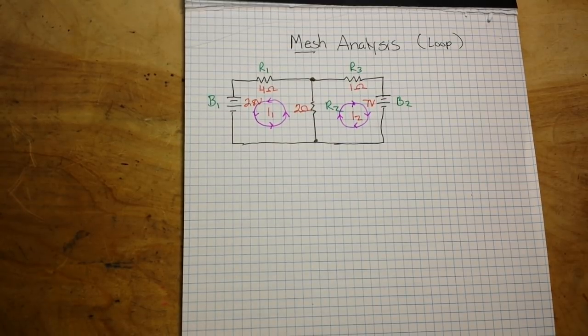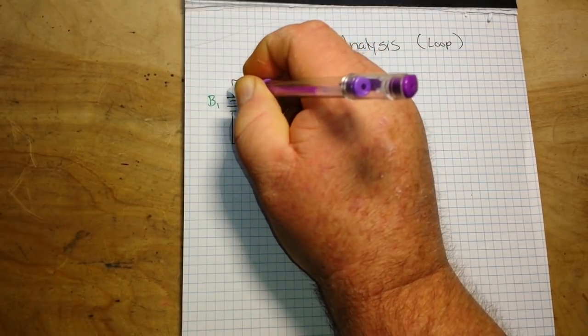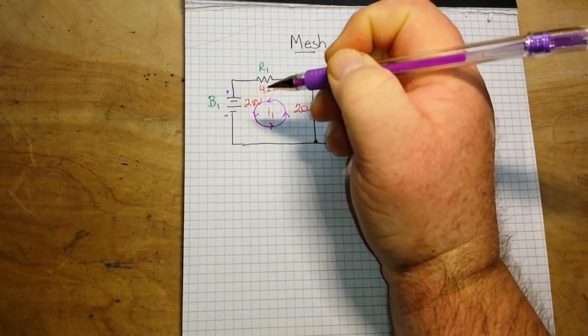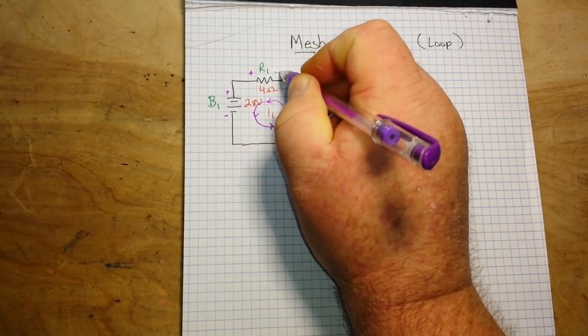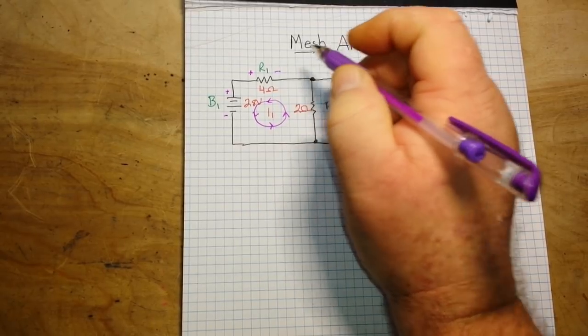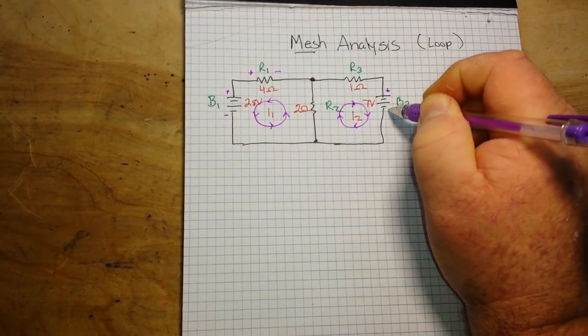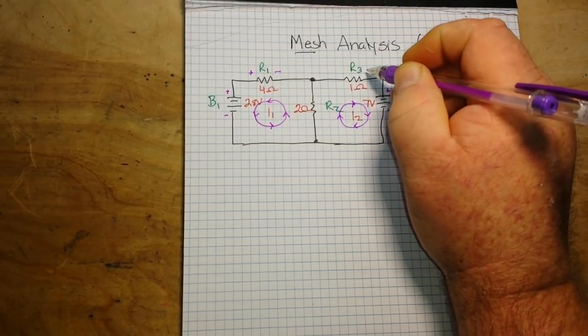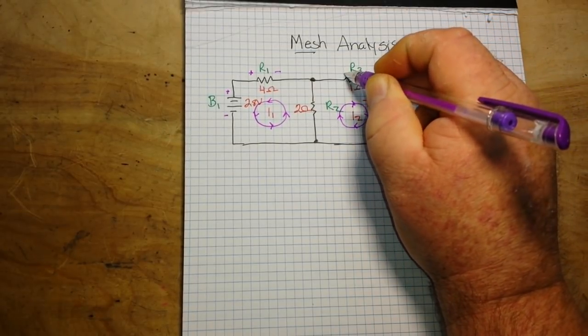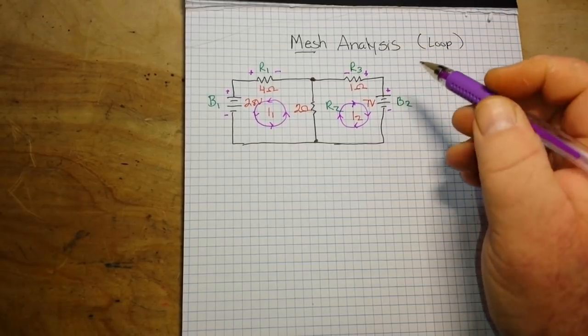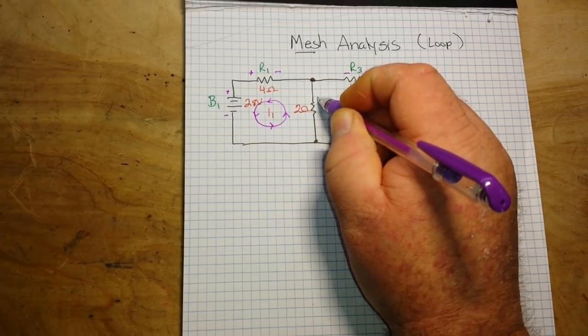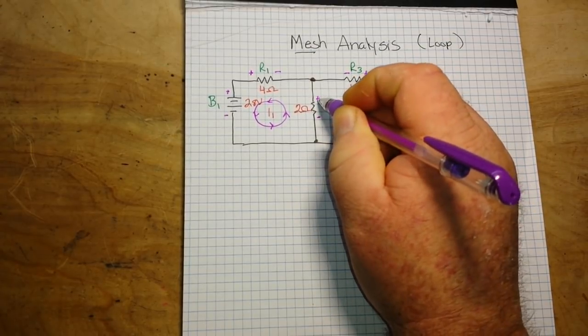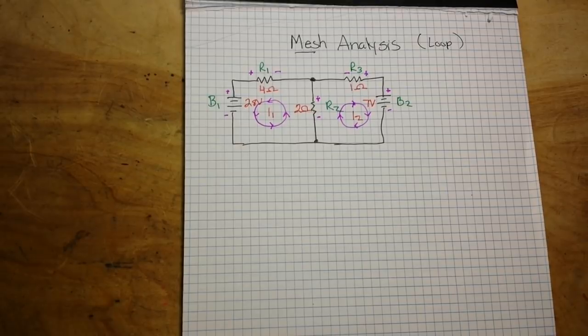Okay, now that we've done that we need to label our supposed polarities. So with our battery we have plus and minus. And then R1 also has plus and minus. Over here battery 2 plus and minus, R3 plus and minus. And then R2, if we follow the directions we can see that R2 is going to be plus and minus in that direction.